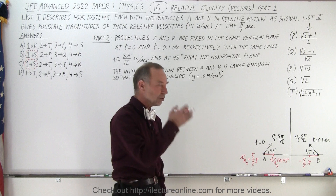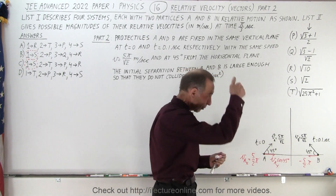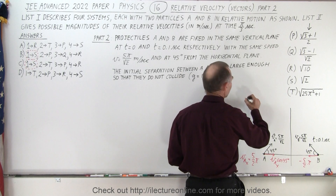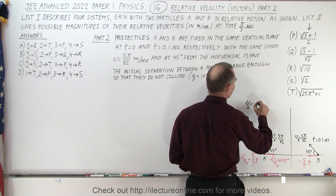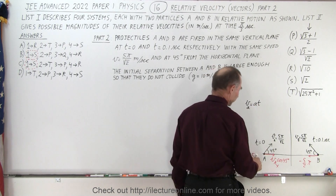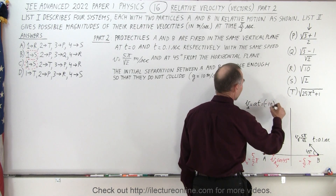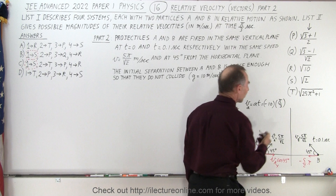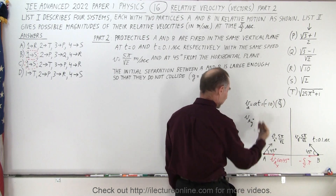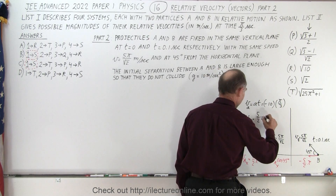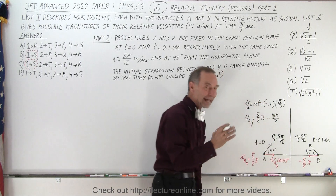Now for the velocity in the y direction: there is an initial upward velocity and then a downward acceleration. The velocity change due to acceleration equals acceleration times time. For A, since it is fired at t equals zero, the acceleration term is negative 10 multiplied by π over 3. So VA in the y direction equals 5π over 2 minus 10π over 3, evaluated at time π over 3.